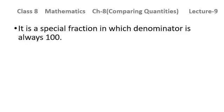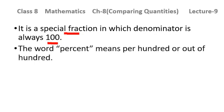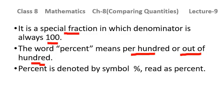Percentage — the word percent means per hundred, or out of hundred. It is basically a special fraction in which the denominator is always hundred. Whenever you see a percentage sign, you need to write the denominator as hundred. The word percent means per hundred or out of hundred. Percent is denoted by the % symbol. This is something you have studied in your previous class also.